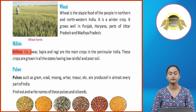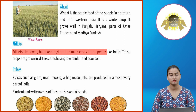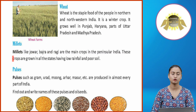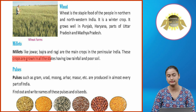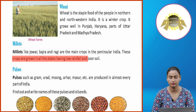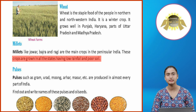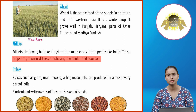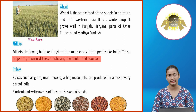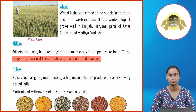Millets like Jowar, Bajra, and Ragi are the main crops in Peninsular India. These crops are grown in all the states having low rainfall and poor soil.